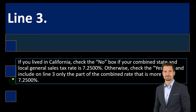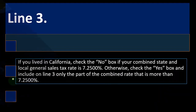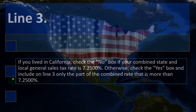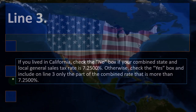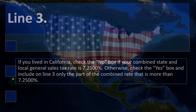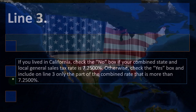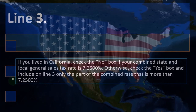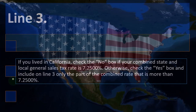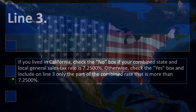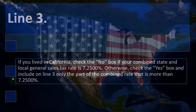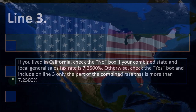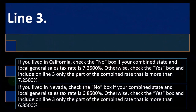Line three: if you lived in California, check the no box if your combined state and local general sales tax rate is 7.25%. Otherwise, check the yes box and include on line three only the part of the combined rate that is more than 7.25%.